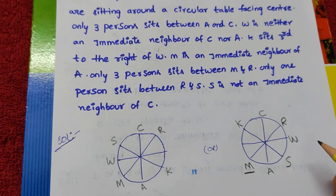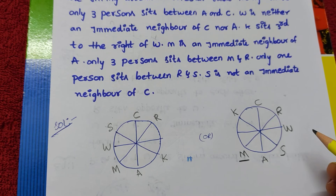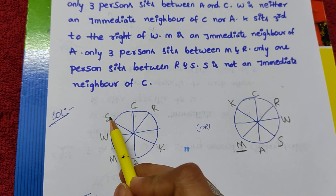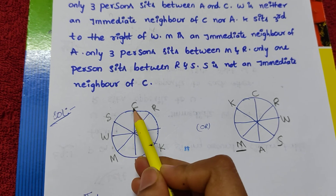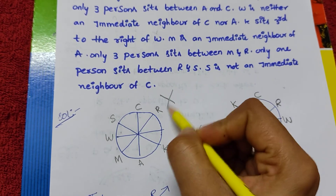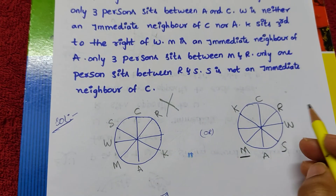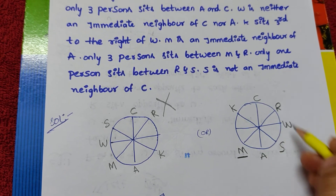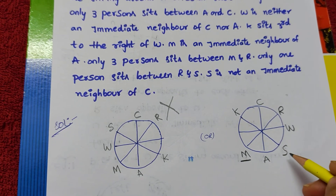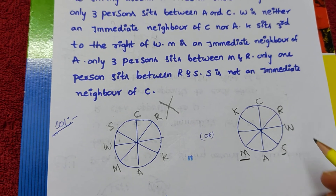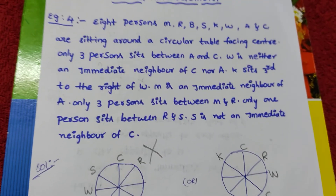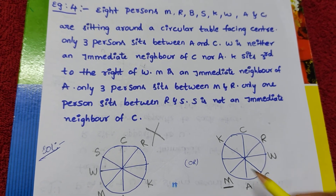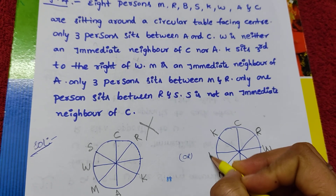S is not an immediate neighbor of C. In the first assumption, S is a neighbor of C — so that assumption is wrong. In the remaining diagram, S is not an immediate neighbor of C — correct, so this assumption is confirmed. The remaining person B is placed in the last empty seat.